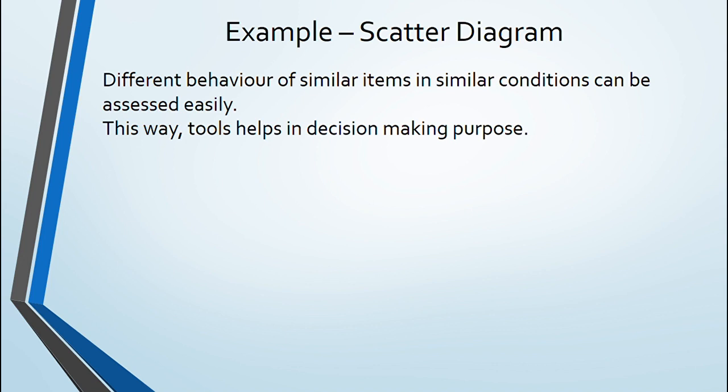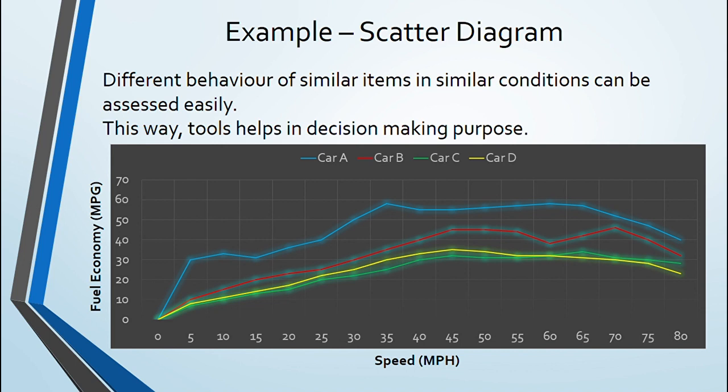He is confused among four cars and decides to plot scatter diagram. He took data of all four cars for further fuel economy across speed range he wants to operate. This is the output of his study and easy pickings now.